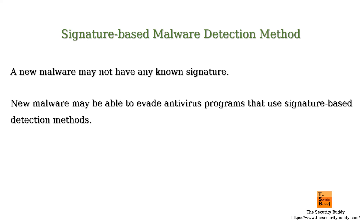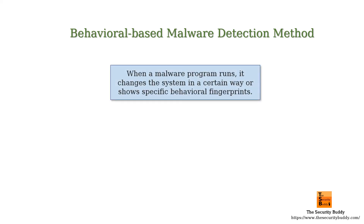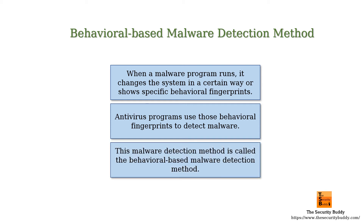Some antivirus programs use behavioral-based detection techniques. In a behavioral-based malware detection method, an antivirus program detects malware based on the behavioral fingerprint of the malware at runtime. In other words, when the malware program runs, it changes the system in a certain way or shows specific behavioral fingerprints, and antivirus programs use those behavioral fingerprints to detect malware.